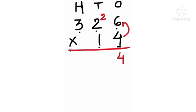Now we multiply 4 by 2 — that is 8 — and we add the carry over: 8 plus 2 is 10. We write 0 and carry 1 over to the 100s place.